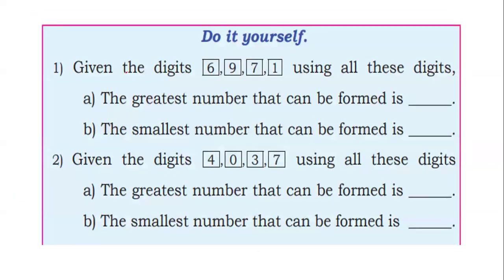Given the digit cards 6, 9, 7, 1 — using all these digits, the greatest 4-digit number that can be formed is 9, 7, 6, 1 — that is 9761, which is the greatest number. The smallest number is 1, 6, 7, 9 — that is 1679.